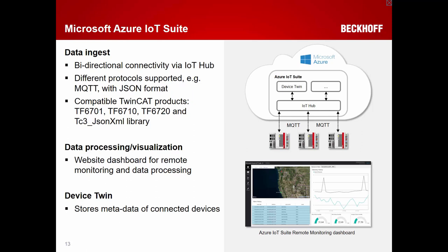Data ingestion in the Azure IoT Suite remote monitoring application is done via the Azure IoT Hub. You can use TwinCat products like TF6701 and TF6720, along with the JSON library, to push data to this application and also subscribe to data from it. The front end is a website dashboard for monitoring devices, with a charting tool, incoming alarm display, and configurable alarm limits.